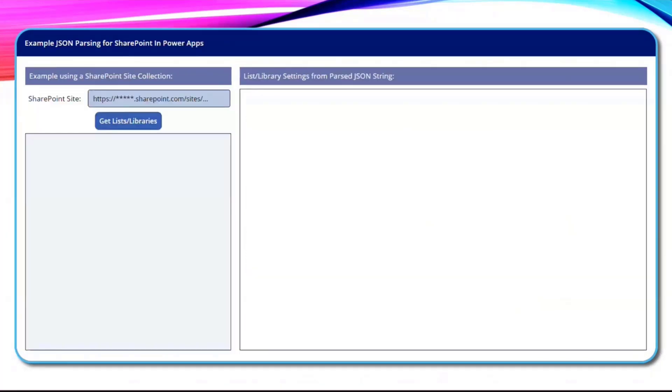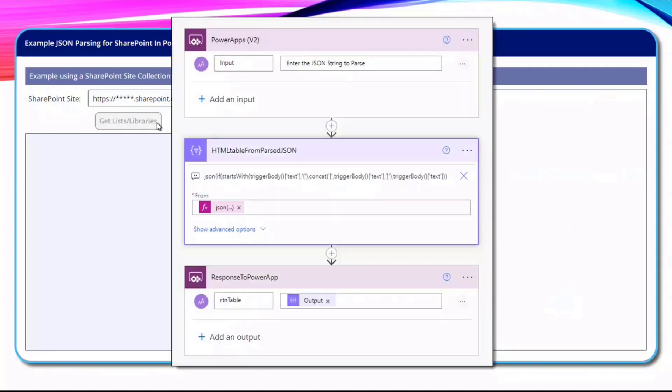This here is an example of trying to use a SharePoint site collection to get some information. Here, I wanted to get all the lists and libraries. Put in the URL for my site collection. Click this button, which then triggers my Power Automate, which triggered that SharePoint site collection.